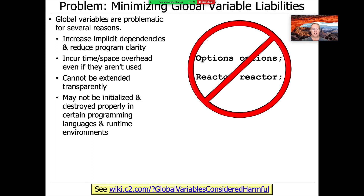There's a link called 'Global Variables Considered Harmful' that talks about all the downsides with global variables. The reason I find it amusing is because whenever people historically want to call attention to something in computing, they say 'such and such considered harmful.' The first such example was Edsger Dijkstra's famous paper 'Go To Considered Harmful,' and since then we've had Null Pointer Considered Harmful, Global Variables Considered Harmful, Switch Statements Considered Harmful, Pointers Considered Harmful — you name it. For those of us who've been around a long time, it's a way of calling attention to something to make a difference.